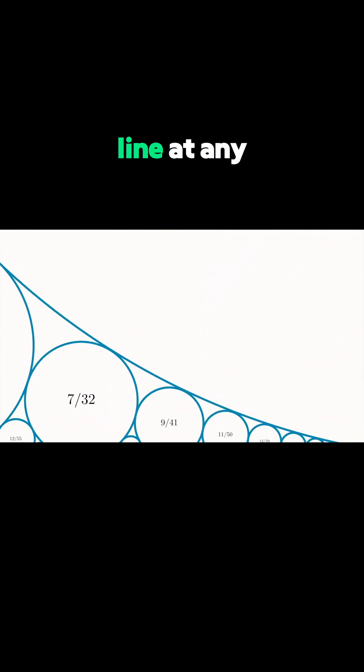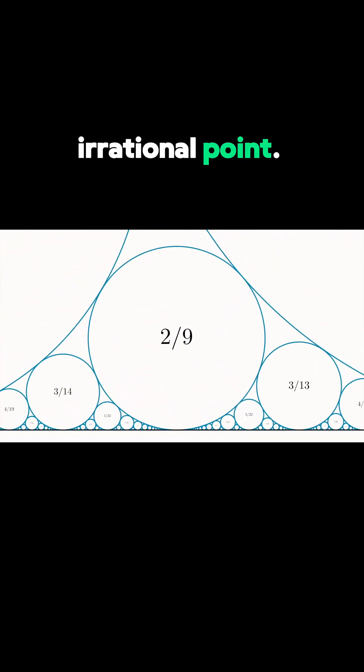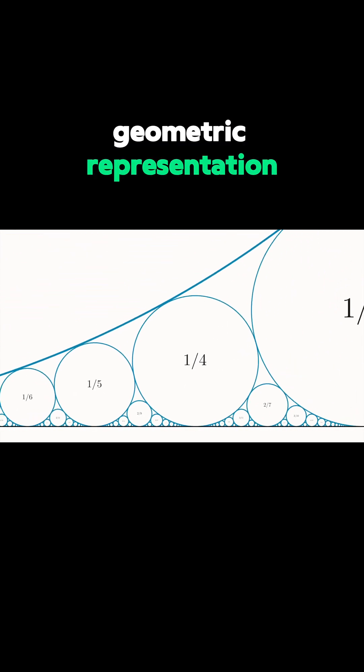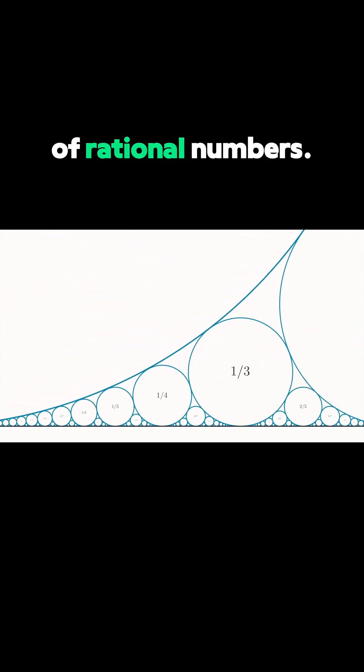There is no circle that touches the line at any irrational point. This means that this set of circles gives us a geometric representation of the set of rational numbers.